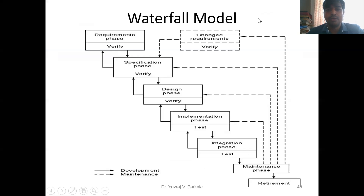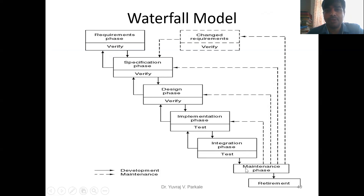In the waterfall model, we design according to the requirements of the client or customer. At each and every phase you have to verify those designs — the requirement specification, design, and implementation. All these steps are verified in that particular phase itself, and only after completion of all steps is the product ready to supply to the customer. Build and fix model goes from down to up — you first supply the product, then change the design accordingly.